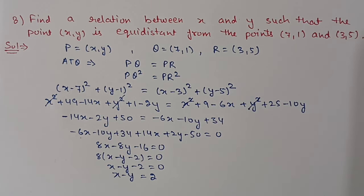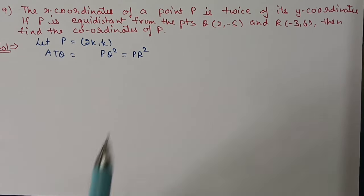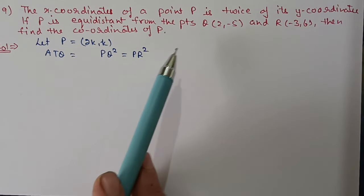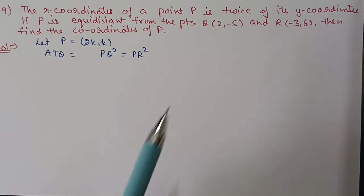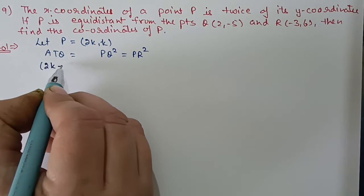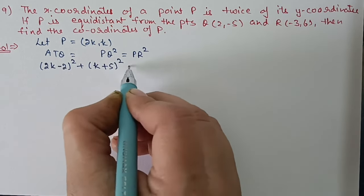Question number 9: The x-coordinate of a point P is twice its y-coordinate. If P is equidistant from Q(2, -5) and R(-3, 6), find the coordinates of P. Let the y-coordinate be k, then the x-coordinate will be 2k. The second condition is that P is equidistant from Q and R, so PQ² = PR². Now applying the distance formula: (2k - 2)² + (k + 5)² = (2k + 3)² + (k - 6)².